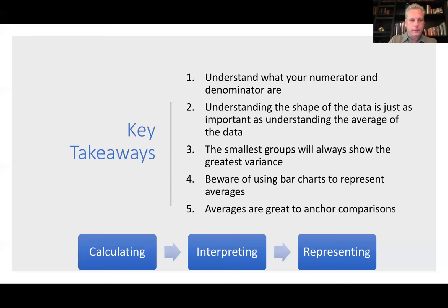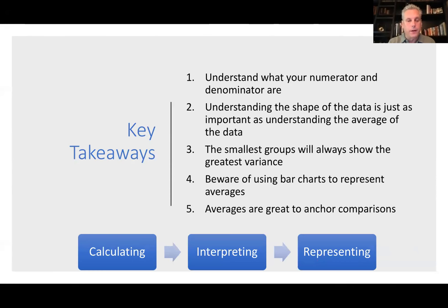Let me turn back to our key takeaways. In calculating an average: always understand what your numerator and denominator are, and don't try to take averages of averages. In interpreting your average: understand the shape of the data is just as important as understanding the average, and the smallest groups will always show the greatest variance. In representing the data: beware of using bar charts to represent averages or any ratio, and averages are great to anchor comparisons. That's what I had prepared — let me open it up for questions.